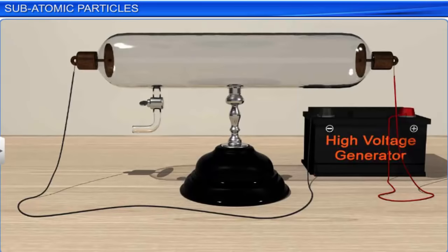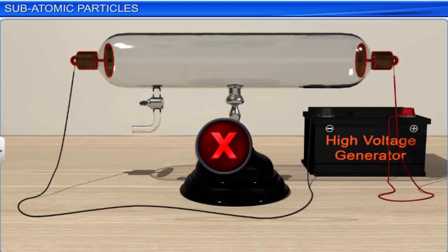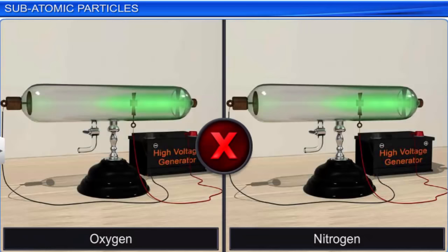Thomson also concluded that the properties of cathode rays do not depend upon the material of the electrodes or the nature of the gas present in the cathode ray tube. This led him to the conclusion that electrons are the basic constituents of all atoms.